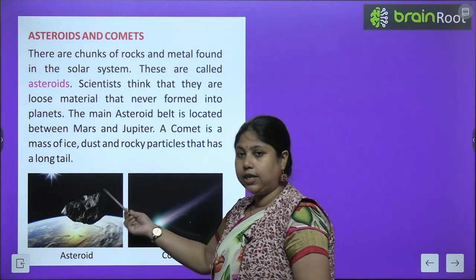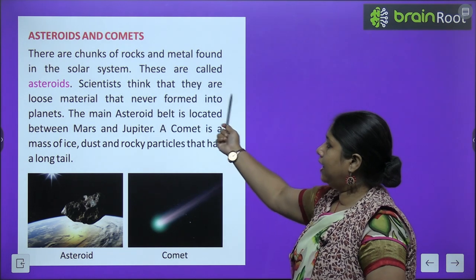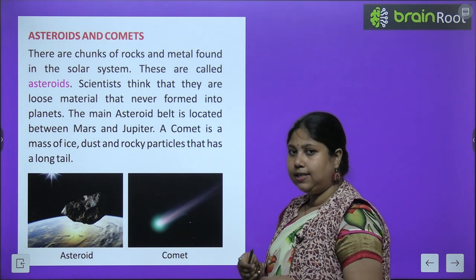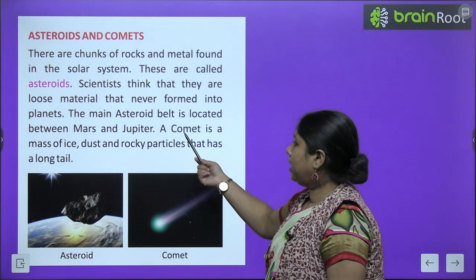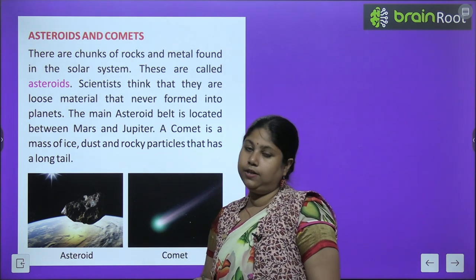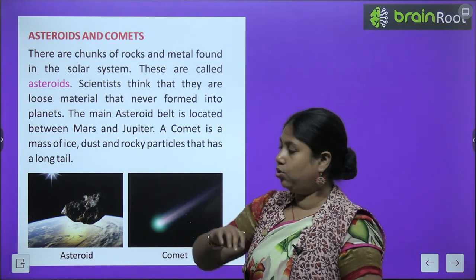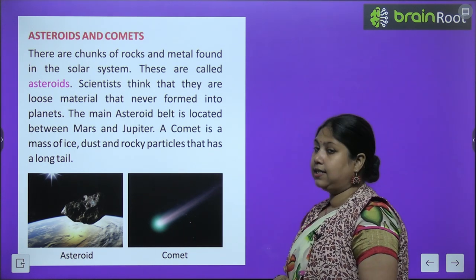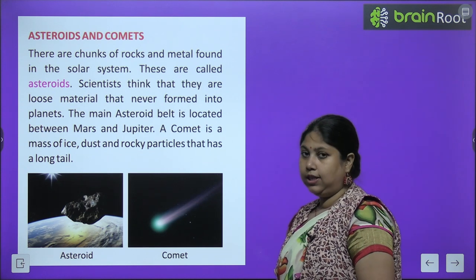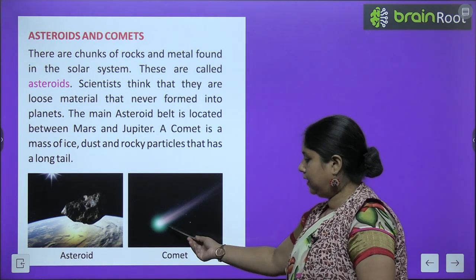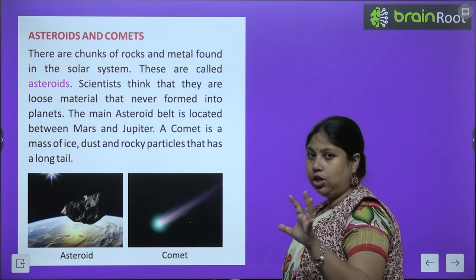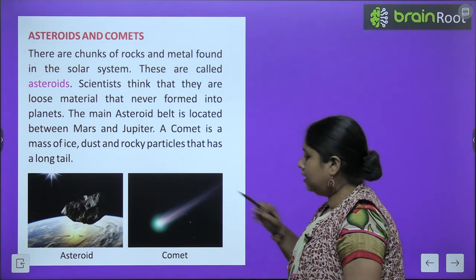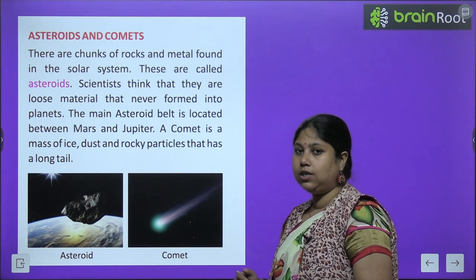Scientists think asteroids are loose material that never formed into planets — ye kabhi planet mein badal nahi paaye. The main asteroid belt is located between Mars and Jupiter. A comet is a mass of ice, dust and rocky particles that has a long tail — kabhi aapne dekha hai shooting star ya toot ta taara? That is actually a comet — ek ice aur dust ka dhela jiske peeche bahut saare particles rehte hain, to ye tail jaisa dikhta hai.